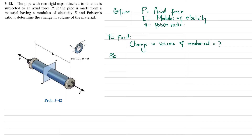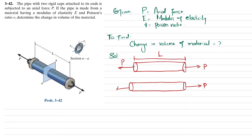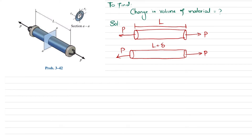Let's start with the solution. If this is the pipe and this is the load P, the pipe has length L. Due to this load, the length of the pipe will increase while the diameter will reduce. The total new length will be equal to L plus delta, where delta is the longitudinal change in length in the axial direction. First, we will move toward finding the normal stress.